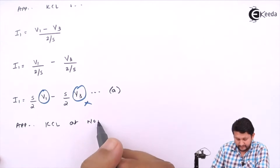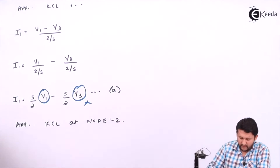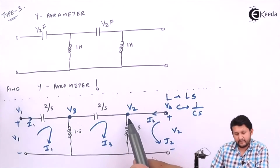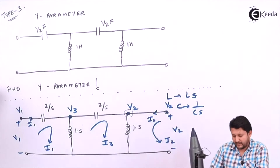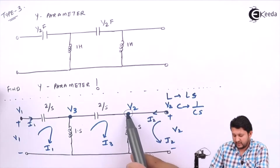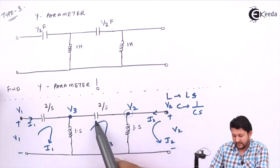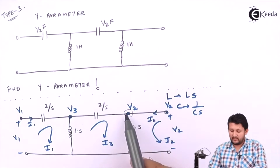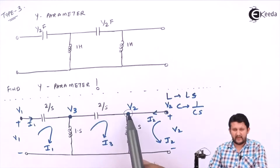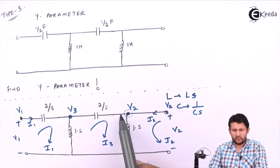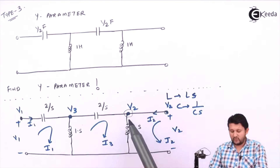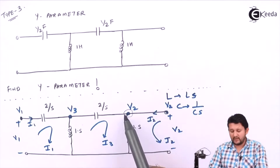Now let's apply KCL at Node 2. At Node 2 we have a current I2 open. I need to assume the current direction. At Node 2, the currents will involve: V2 over R since V equals IR means I equals V over R; so we get V2 minus V1 over certain impedances in s-domain.